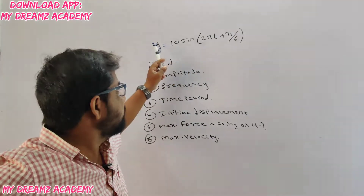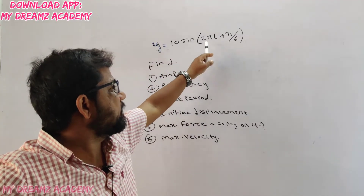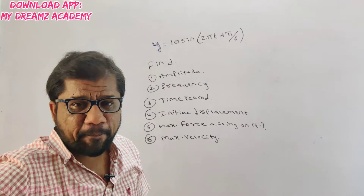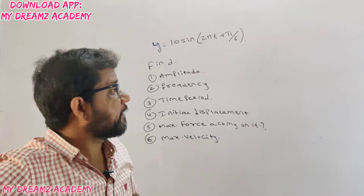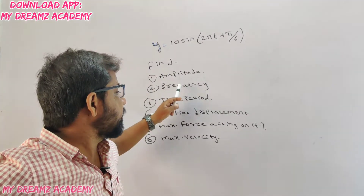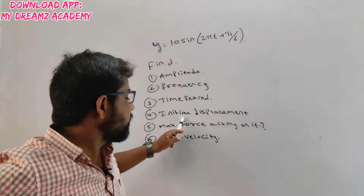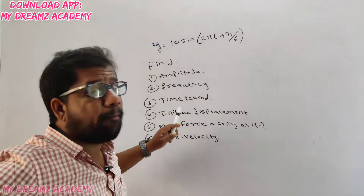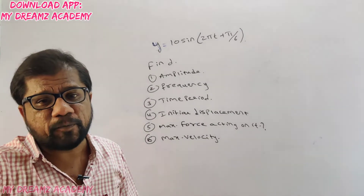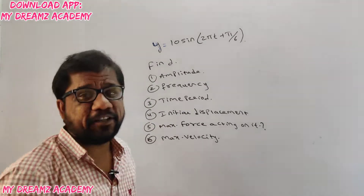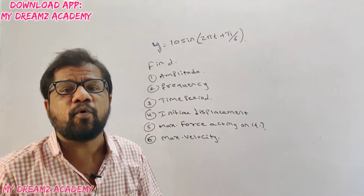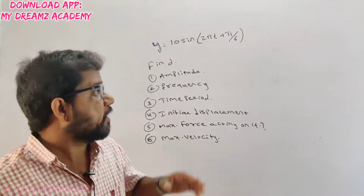The question will be in this format: a general form of the equation will be given, for example y = 10 sin(2πt + π/6). Based on this equation, you may be asked to find amplitude, frequency, time period, initial displacement, maximum force, and maximum velocity. These are the possible questions, and practicing these models will cover almost half the chapter.